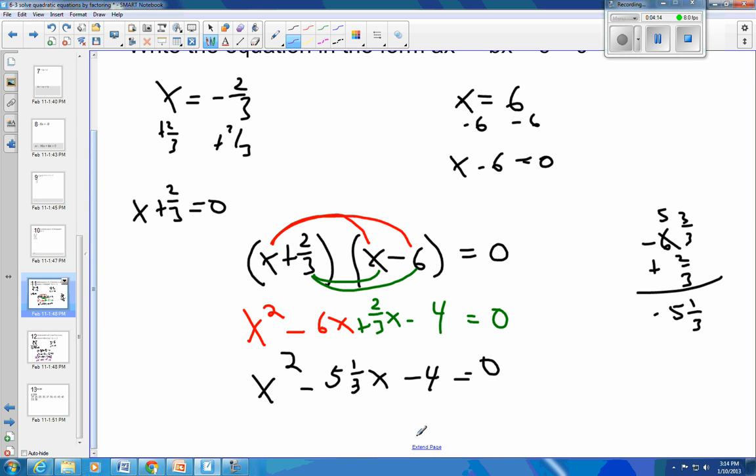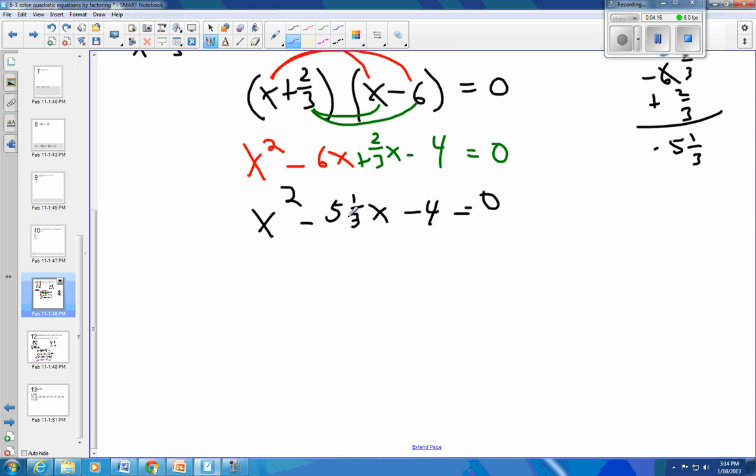So we can go back to that previous problem and do the same thing there. We've got thirds. So you could multiply through by 3. So this would become 3x squared. And 3 times 5 and 1 third, well, 5 and 1 third is the same thing as 15, 16 thirds. So 3 times 16 thirds is just 16. So that would be minus 16x. 3 times 4 is minus 12. And that's equal to 0 because 3 times 0 is 0.